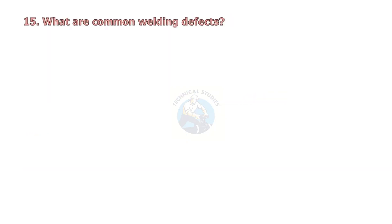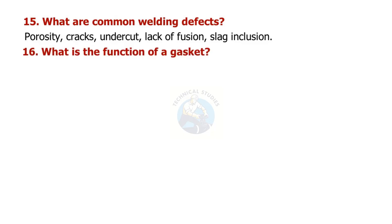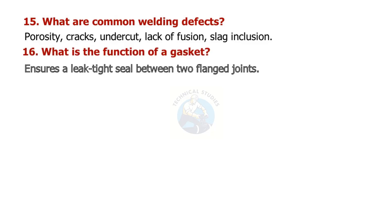What are common welding defects? Porosity, cracks, undercut, lack of fusion, and slag inclusion. What is the function of a gasket? It ensures a leak-tight seal between two flange joints.